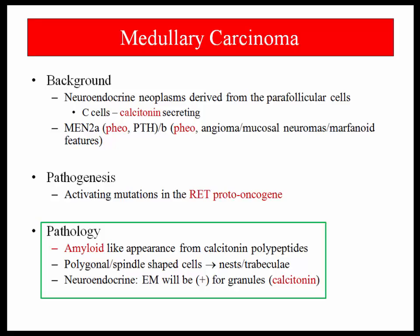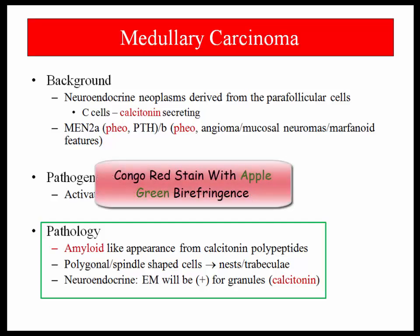There is an amyloid-like appearance that results from synthesis and secretion of calcitonin. Amyloid essentially represents overproduction and abnormal folding of proteins. The amyloid in medullary thyroid carcinoma is composed of calcitonin. They don't say amyloid was present — they describe it by Congo red staining with apple green birefringence when viewed under a polarizing lens. If they mention Congo red stain in any discussion of thyroid, they are telling you medullary thyroid carcinoma.